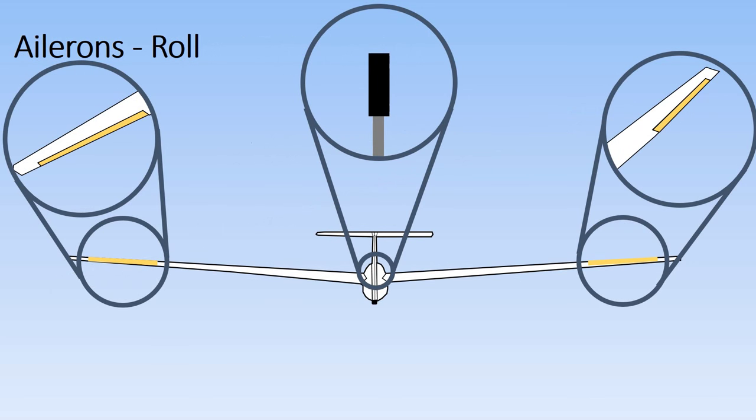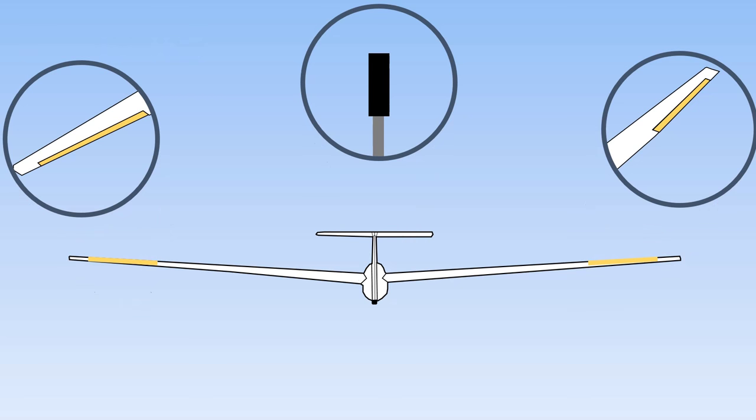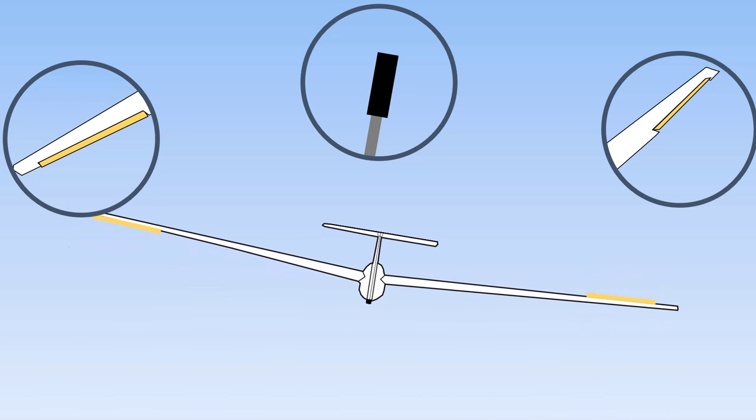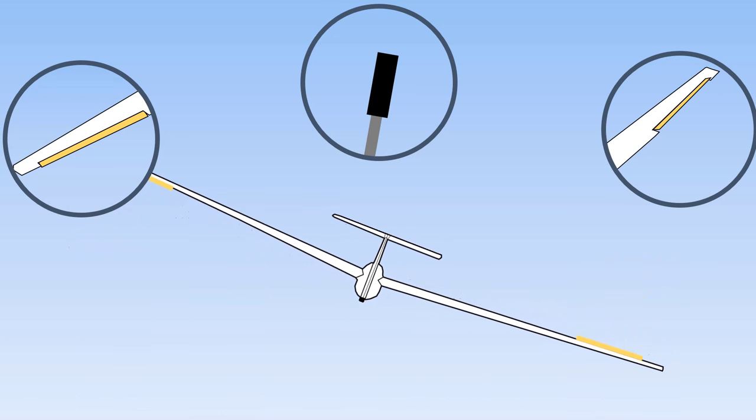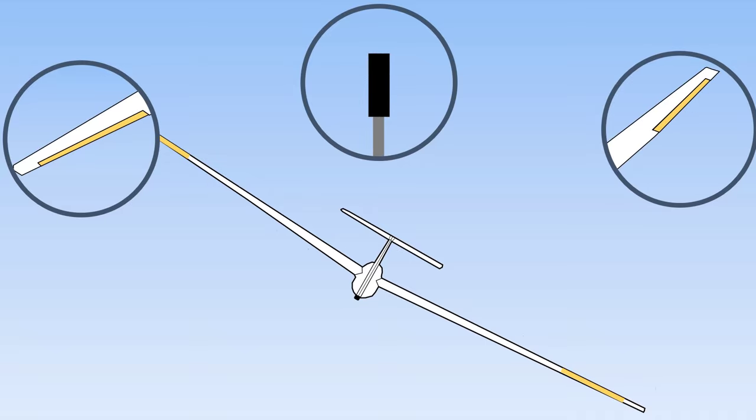Now, let's look at how the ailerons roll the glider. The ailerons on each wing always move in opposite directions to each other. Moving the stick to the right will cause the glider to roll to the right. The glider will continue to roll until the stick is centralised. With the stick centralised, the glider will maintain the angle of bank.